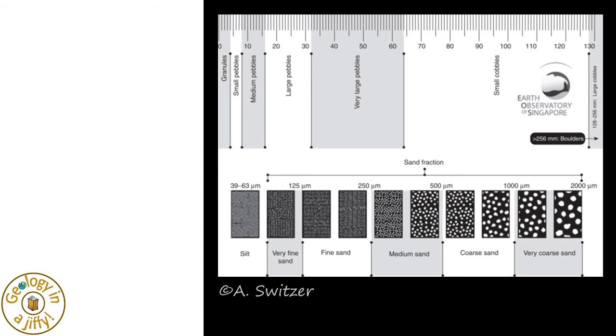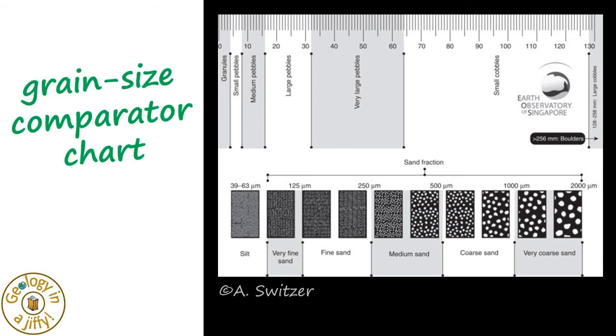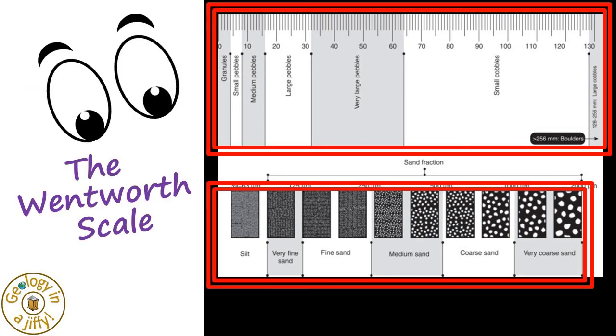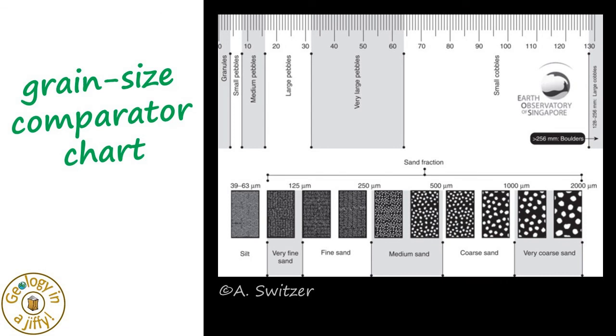To study grain size in rock samples, we use grain size comparator charts, like this version, upon which we see the Wentworth Scale, both pictorially and by grain size.